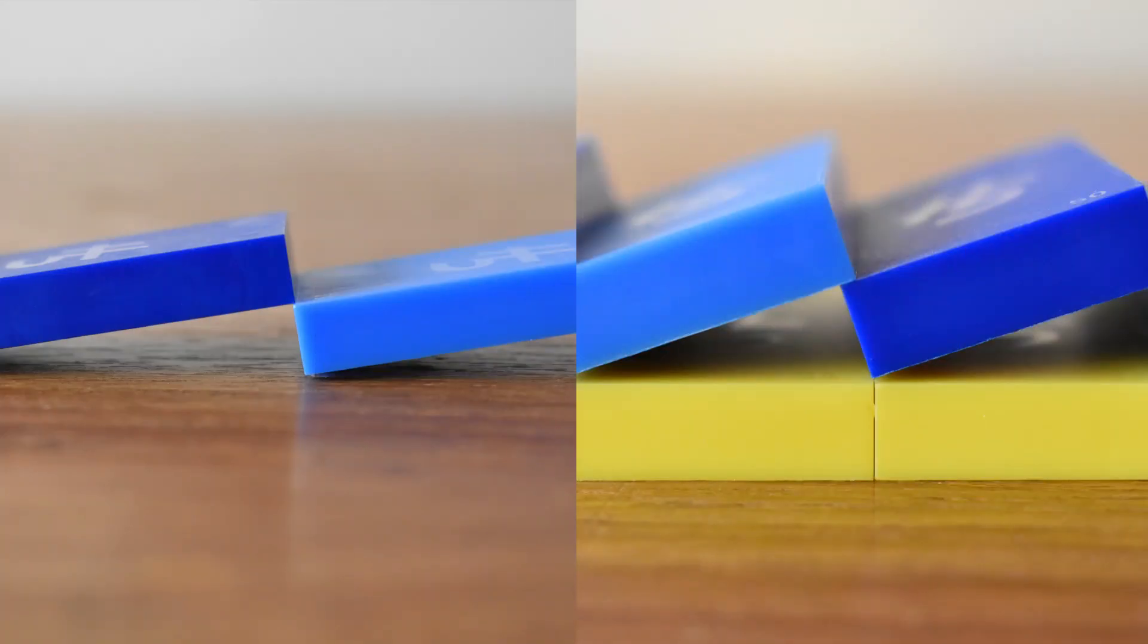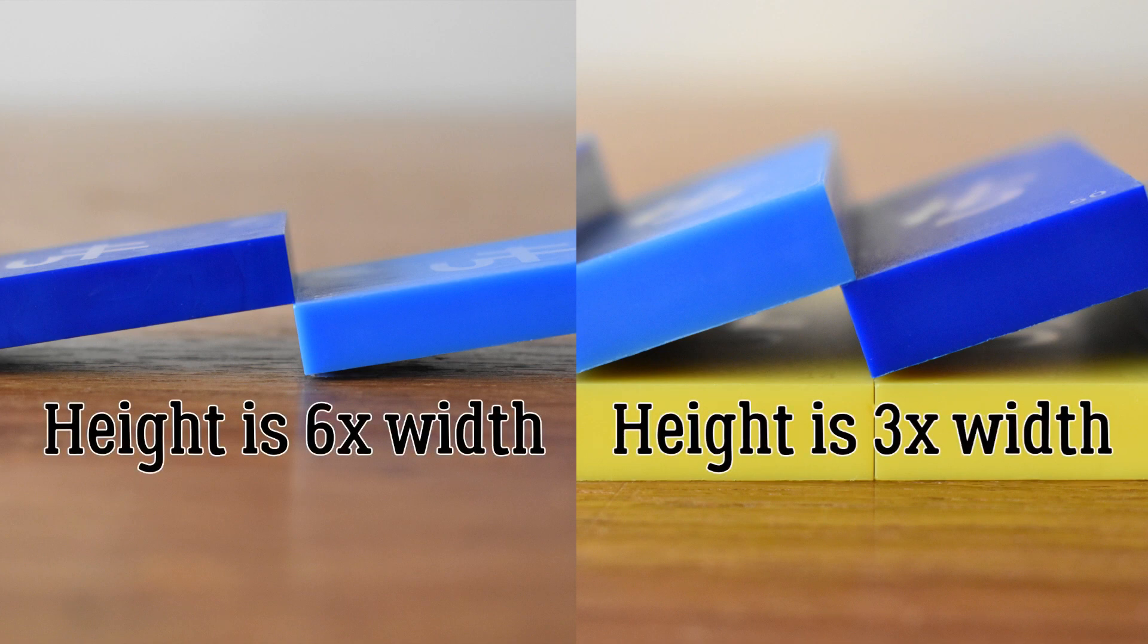So going back to the two dominoes examples, it's a similar comparison. By turning the dominoes horizontally, it's like making them wider in a way. The height-to-width ratio is much closer, giving horizontal dominoes a much larger overhanging distance than vertical dominoes.